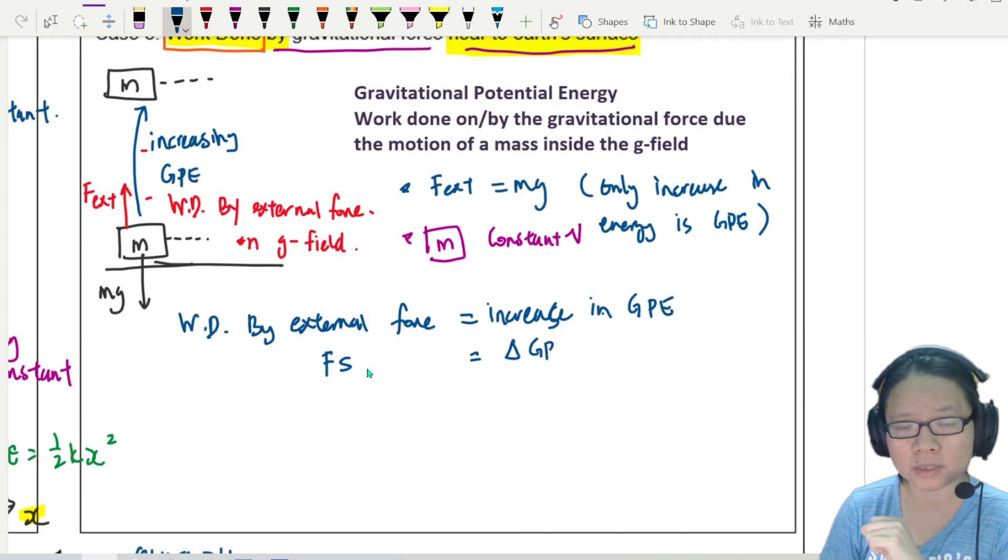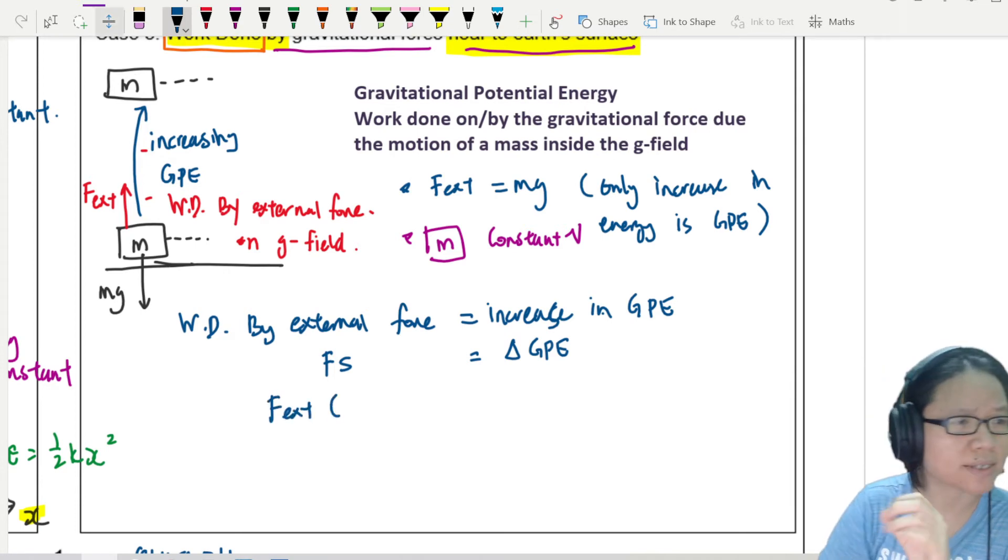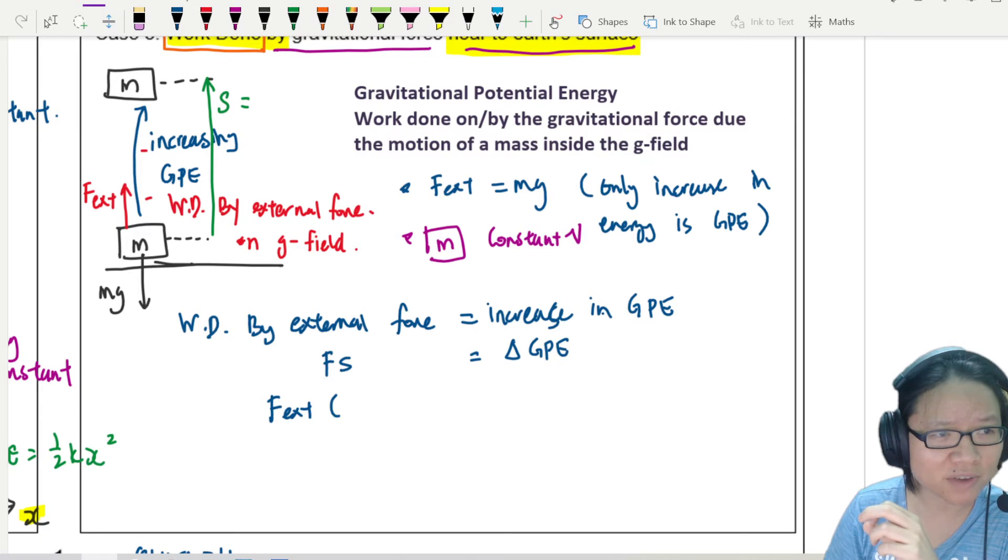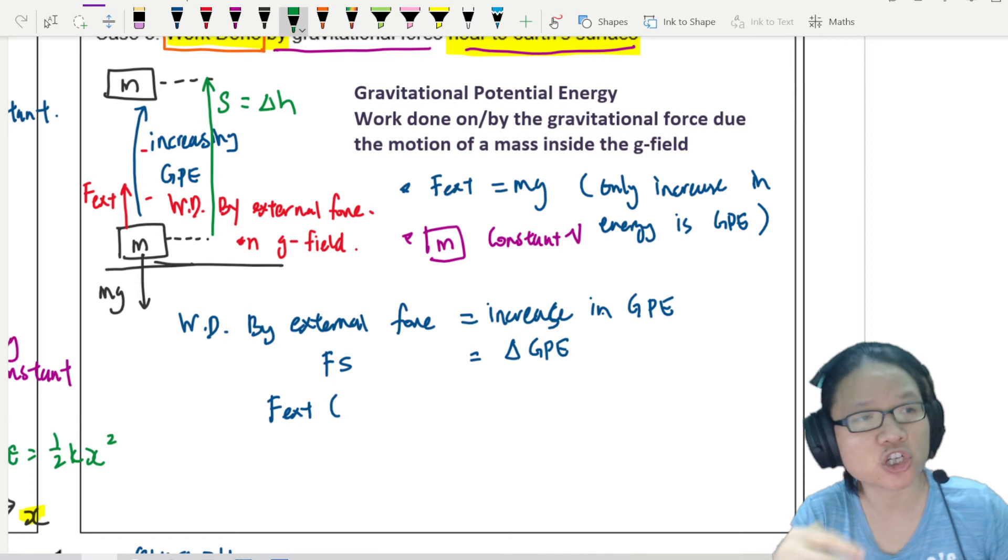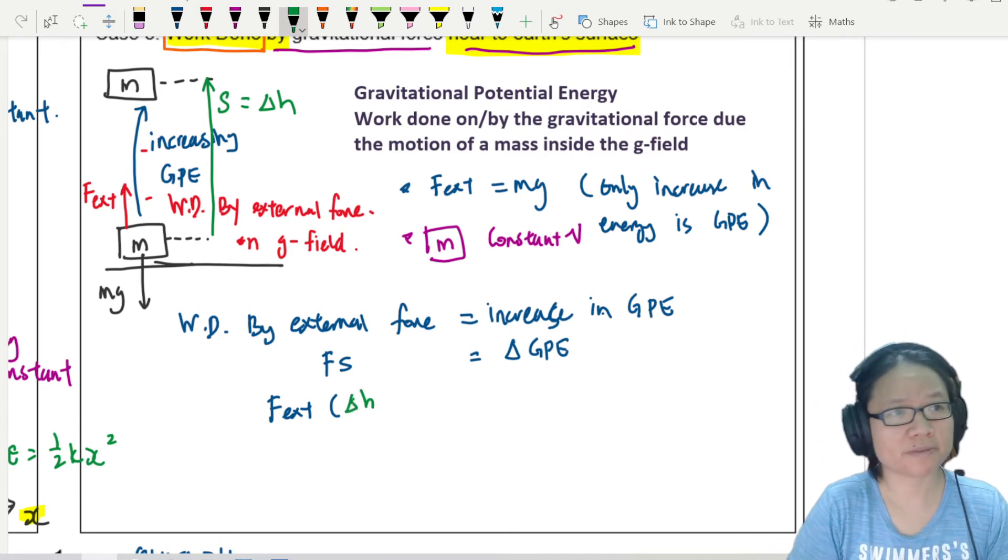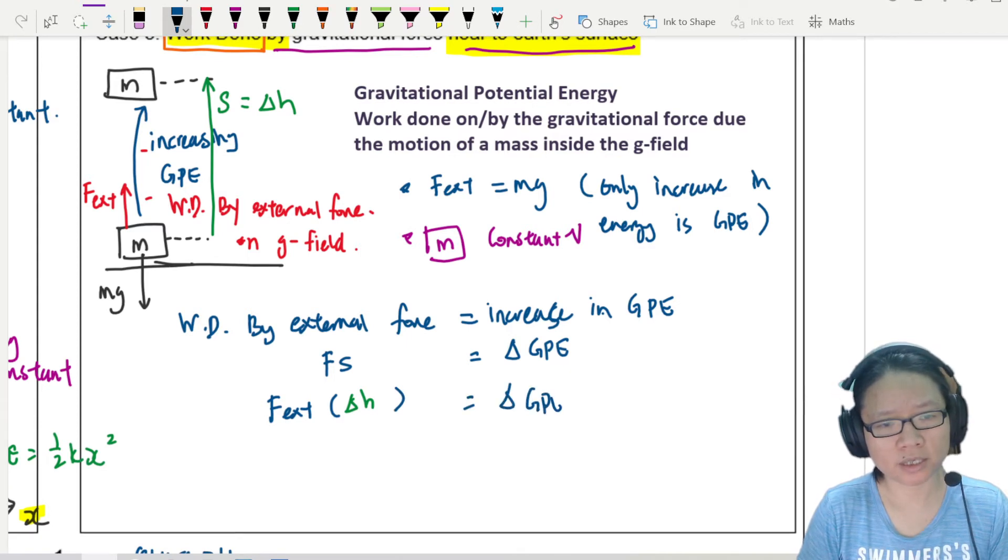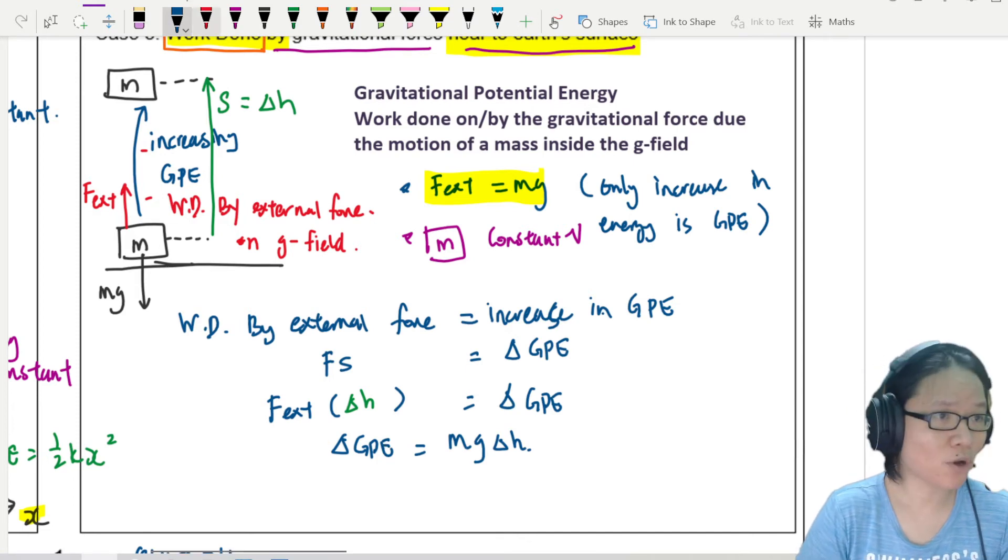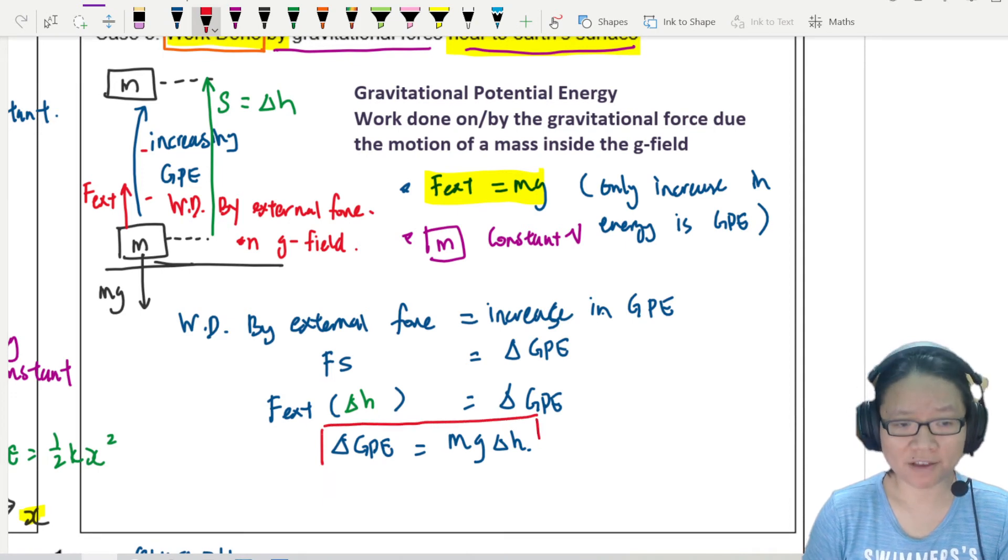So this work done by external force will always use Fs. Remember? So this is change in GPE. But if we look at this F, this is your external force. And where is your S, my dudes? We increase the height, right? So here to here is your S. But we like to call this H because it's increased in height. So this is F. And maybe instead of S, I'll call this delta H. Change in height from the initial position to the final position. So this will be change in height. This is equal to your change in GPE. But also, external force is equal to mg. So that the only energy that is increasing is GPE. So I can put this one inside. And I end up with change in GPE is equal to mg change in height. Familiar equation? Seen it before?